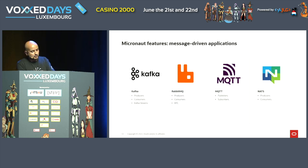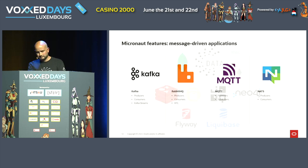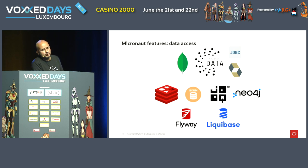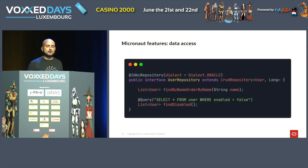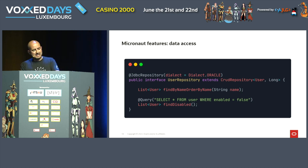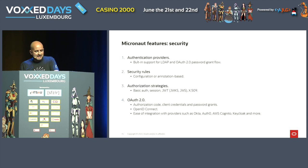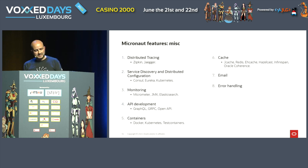In terms of messaging, there's support for producers and consumers in different technologies. There is a data access solution called Micronaut Data — equivalent to Spring Data — which supports a variety of technologies, is based on the repository pattern, and generates queries at build time rather than runtime. There's also a whole security solution, distributed tracing, service discovery, distributed configuration, monitoring, cache support, and more.